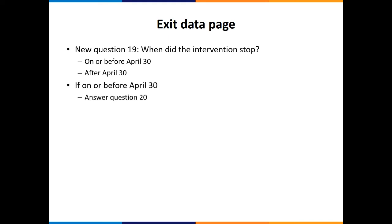If they indicate that the intervention stopped on or before April 30th, they will then, the logic of the website will then have them pick a response for question number 20, which is, what is the status of the intervention? And then depending on their response to question 20, they may have to answer question 21 or 22, or they may have to answer 23 or 24.